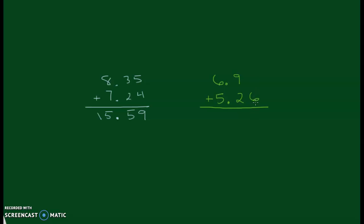So here nothing or 0 plus 6 is 6. 9 plus 2 is 11. Put our decimal down. 1 plus 6 is 7 plus 5 is 12. So we get 12.16.